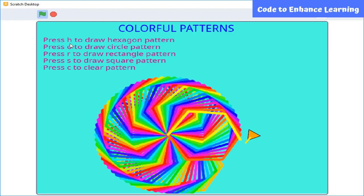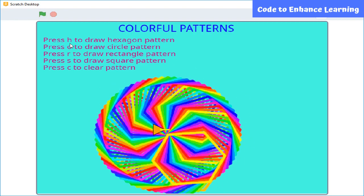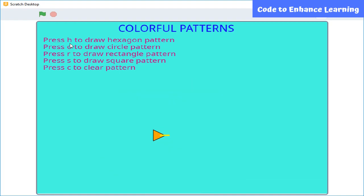Here you can see, when I press H, a colorful hexagon pattern has been drawn. In order to clear screen, press C. Similarly, we can draw other patterns also by pressing their corresponding keys. Let's do it.